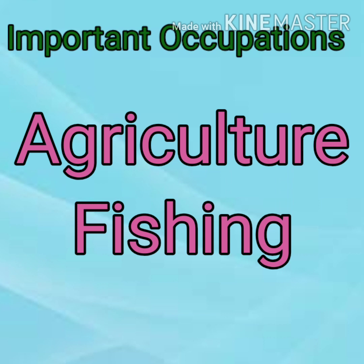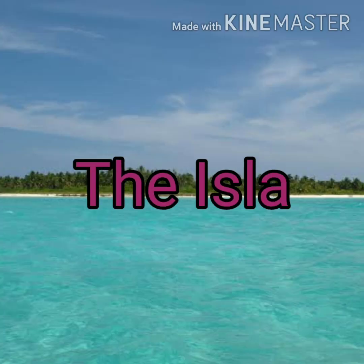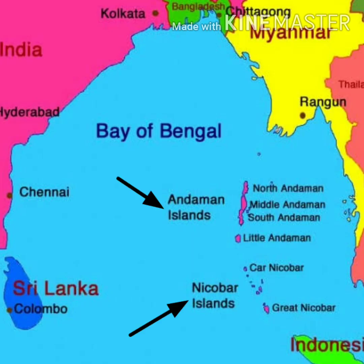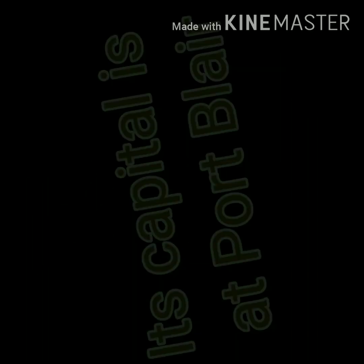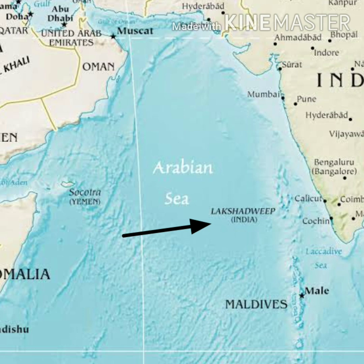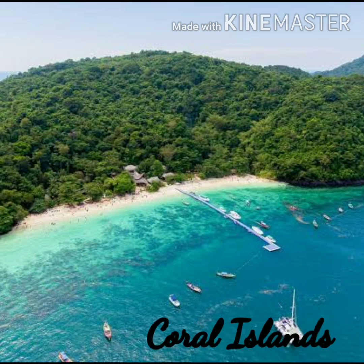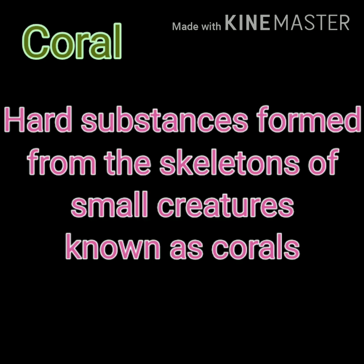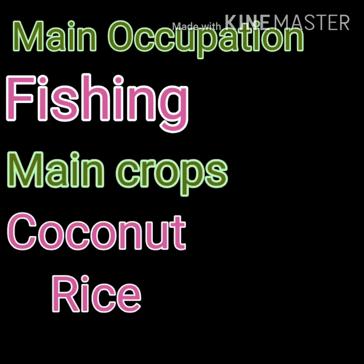Our next topic is the islands. The Andaman and Nicobar Islands are located in the Bay of Bengal, and their capital is Port Blair. These islands are covered with forest and have a sparse human population. Then we have the Lakshadweep Islands, located in the Arabian Sea, with the capital at Kavaratti. These are called Coral Islands, made up of hard substances formed from the skeletons of small sea creatures known as corals. Fishing is the main occupation there, and coconut and rice are the main crops.